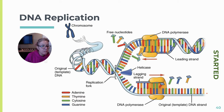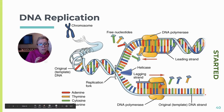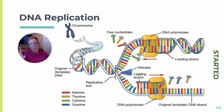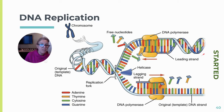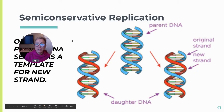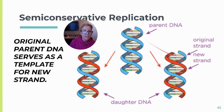DNA polymerase III builds the leading strand toward the replication fork, bringing in nucleotides and ensuring correct base pairing. The lagging strand is harder and slower because it faces a 5' end — the enzyme can only read 3' to 5'. So for the lagging strand, the enzyme waits for some unwinding, jumps back, goes in that direction, and when more is unwound, jumps back again — always reading 3' to 5', making 5' to 3'.